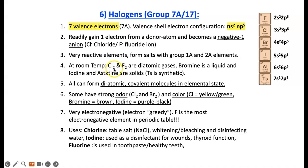At room temperature, Cl2 and F2 fluorine gas are diatomic gases. Bromine is a liquid. Iodine and astatine are solids. They can form diatomic covalent molecules in element state. Some have strong odor like chlorine and bromine. You have smelled chlorine when you smell bleach. Some have a bright color. Chlorine is a yellow-green gas. It was used in World War I to kill people. It's toxic. Bromine is a brown substance. Iodine is a purplish-black substance. They are all very electron-greedy elements. Fluorine up here on the top is the most electronegative, electron-greedy element in the periodic table. As you go down in the column, electron greediness slightly decreases.